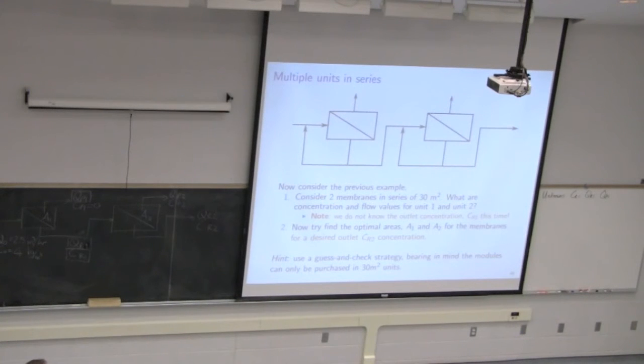So we ended the class yesterday by setting up the equation system after identifying our three unknowns. We can look at solving the first module, and once we have that set, then solving the second module is just a repeat. Let's just focus on the first module where we have our feed of known conditions coming in, known flow and concentration. We're given the area A1. We're told that we're purchasing these in units of 30 meters squared.